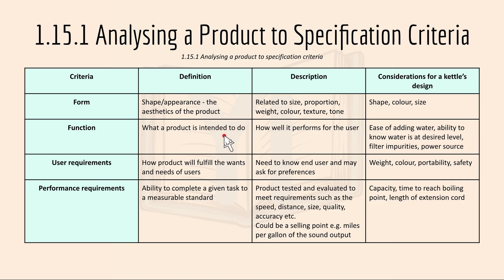For function, it's what a product is intended to do — basically how well it performs for the user. For a kettle, it could be the ease of adding water, the ability to know that water is at a desired level, filtering impurities, and the power source.